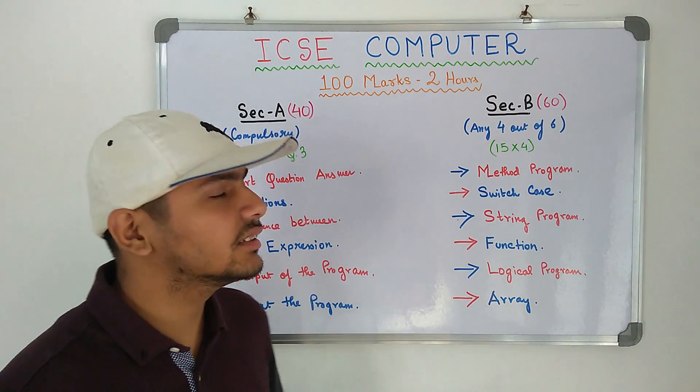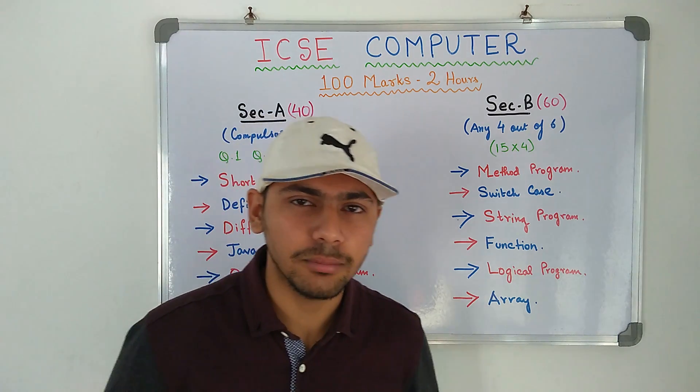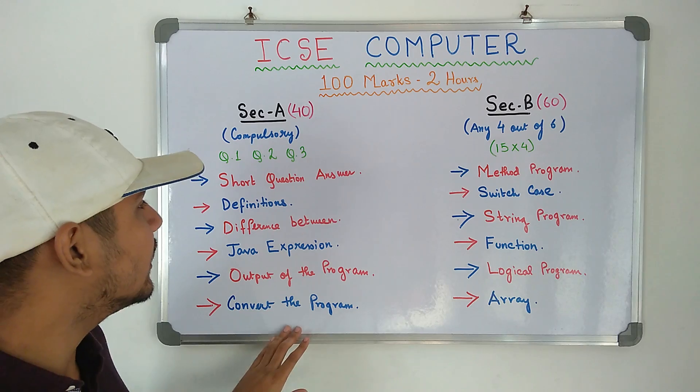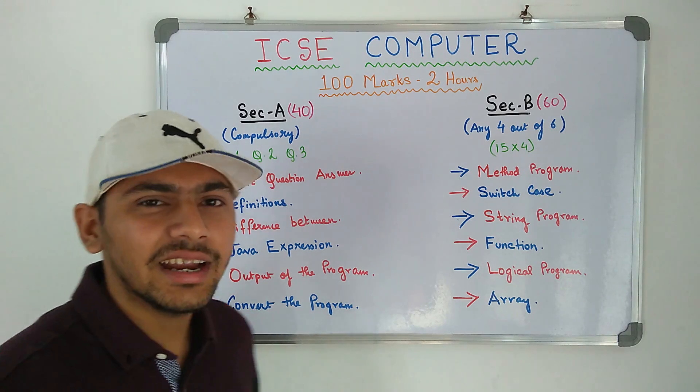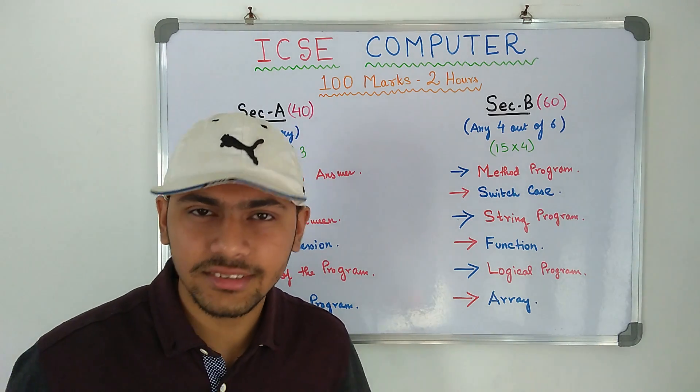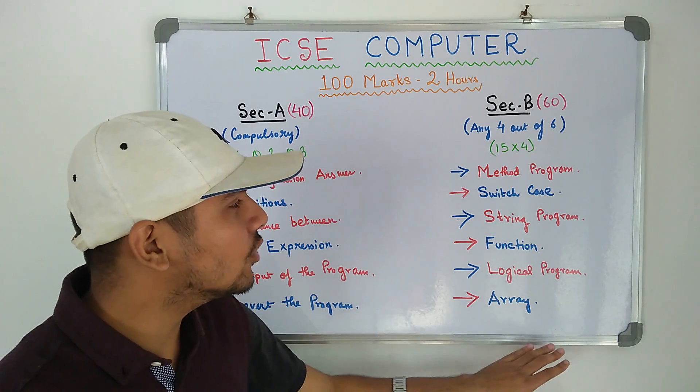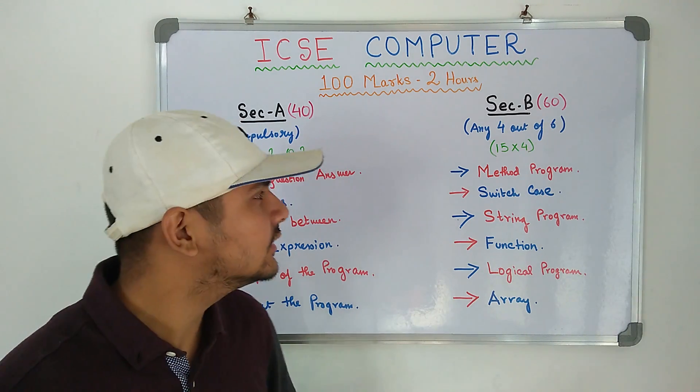Then two hours is more than enough to solve this question paper. You won't need more than 30 to 40 minutes in section A. It is very short. You have to write short, short answers and you won't require more than one hour or one hour 10 minutes in section B.